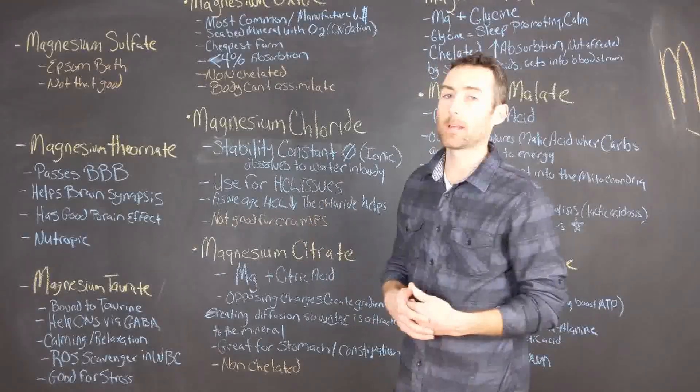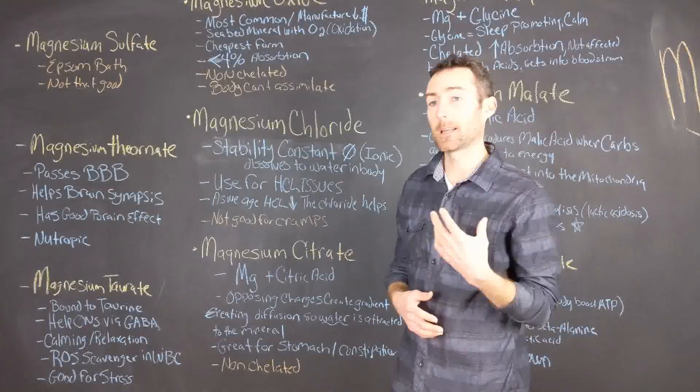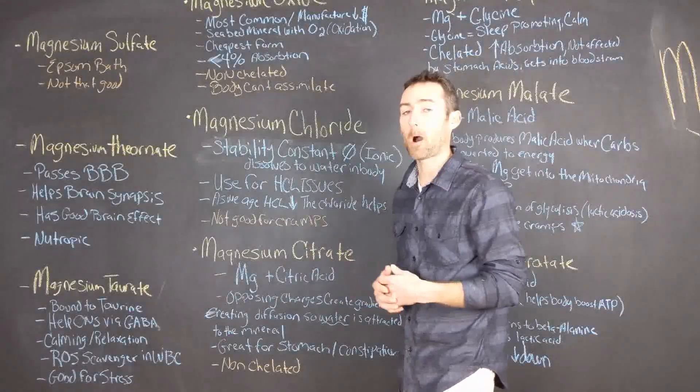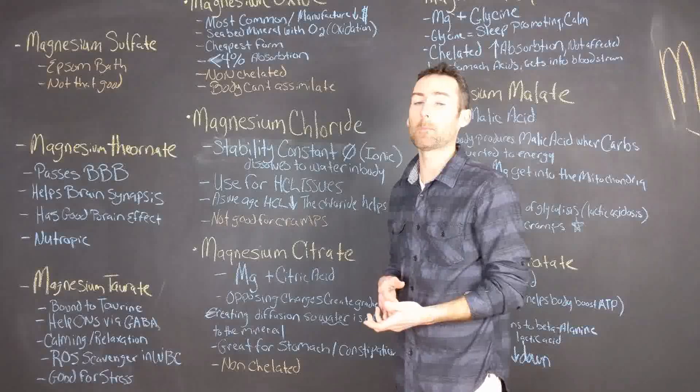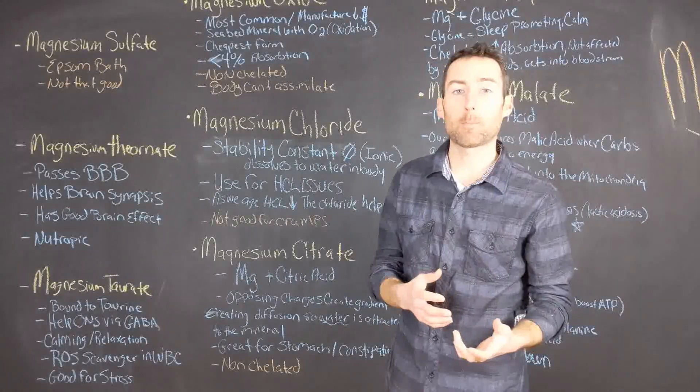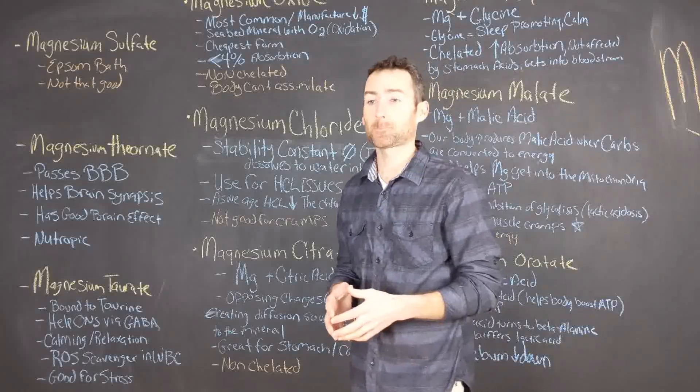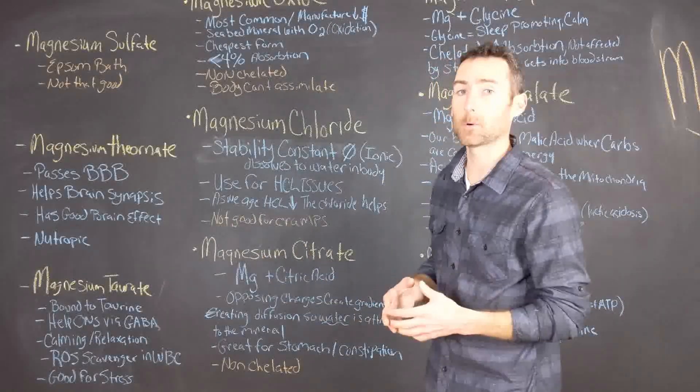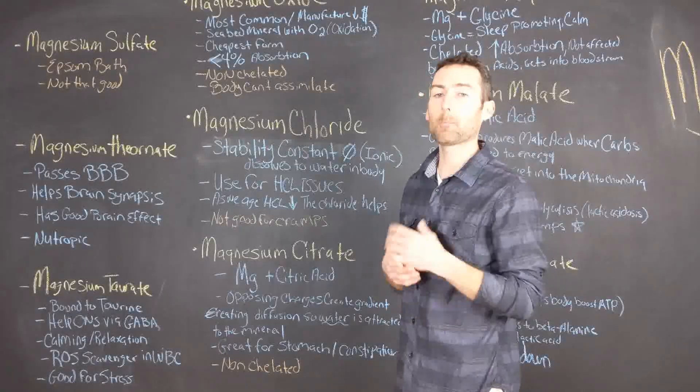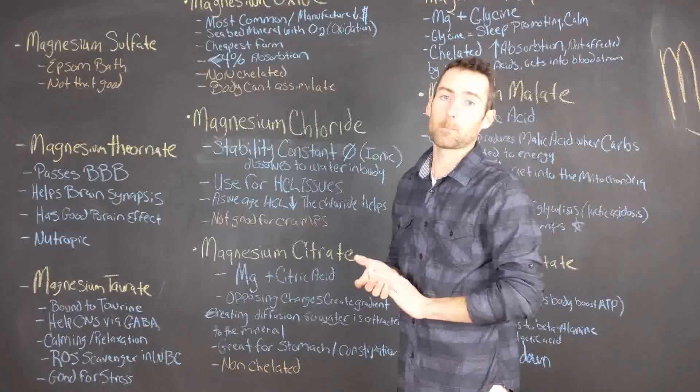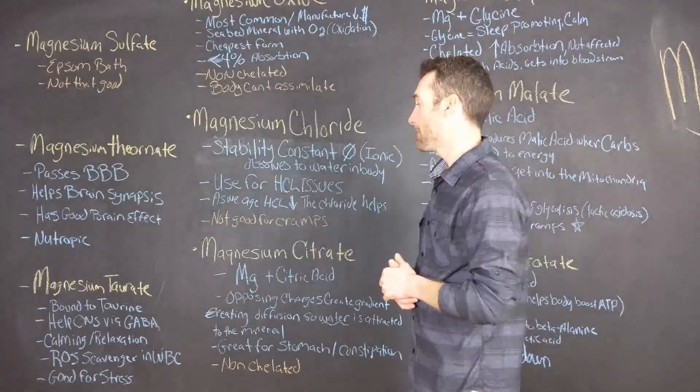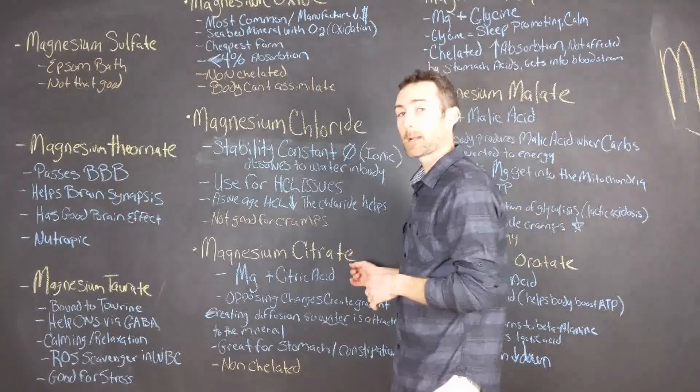Why magnesium chloride is really good is because it actually has a stability constant of zero, so it dissolves into water in the body, making it an ionic form. You're going to see magnesium chloride in a lot of liquid preparations of magnesium. This magnesium is really bioavailable. It assimilates in the body really well. The only downfall is it's not the best for muscle cramps.